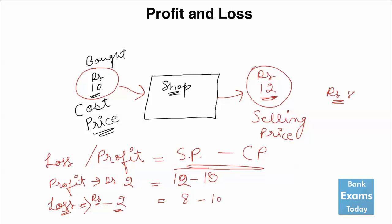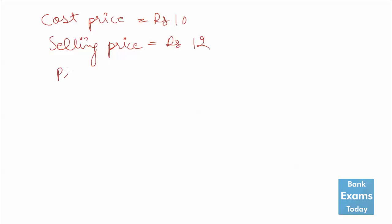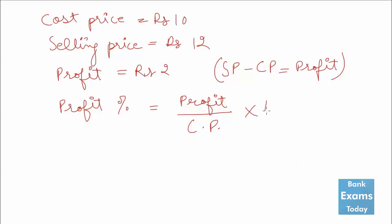Now I will explain how to calculate the profit percentage. The cost price is rupees 10 and the selling price is rupees 12, so the profit is rupees 2. You can remember: Profit = SP minus CP. To calculate the profit percentage or gain percentage, the formula is: Profit divided by Cost Price, multiplied by 100. So here, 2 divided by 10 multiplied by 100.